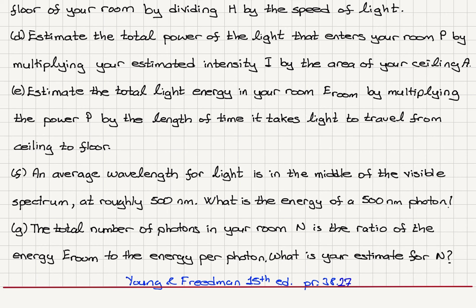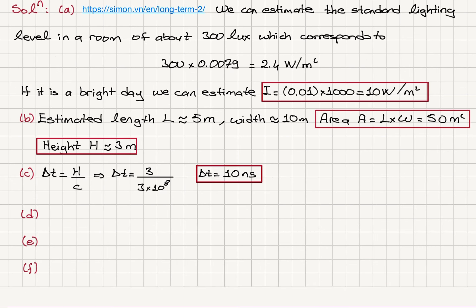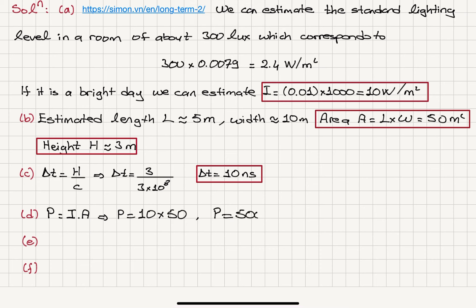For part d, we estimate the total power of the light that enters the room by multiplying the estimated intensity by the ceiling area. The intensity is 10 watts per meter squared, so the power is intensity multiplied by area: 10 times 50 square meters, which gives us 500 watts.